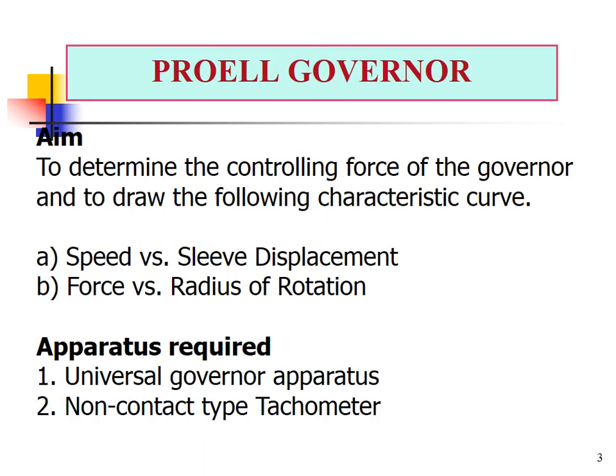The aim of the Proel Governor experiment is to determine the controlling force of the governor and draw the following characteristics: speed versus sleeve displacement, and force versus radius of rotation. The apparatus required for this experiment is the universal governor apparatus and a non-contact type tachometer.